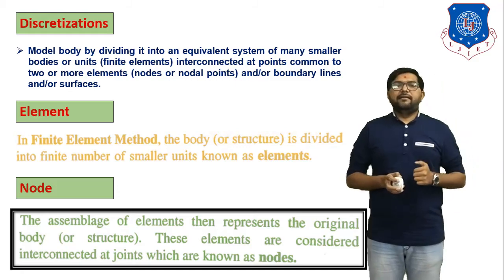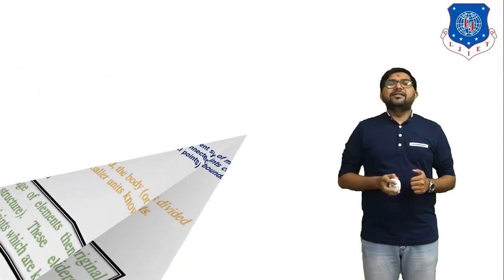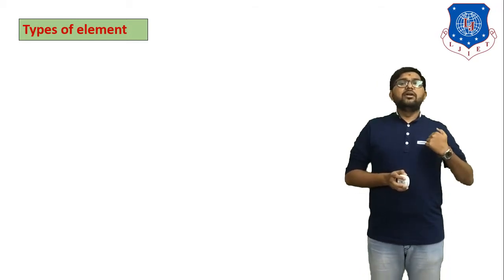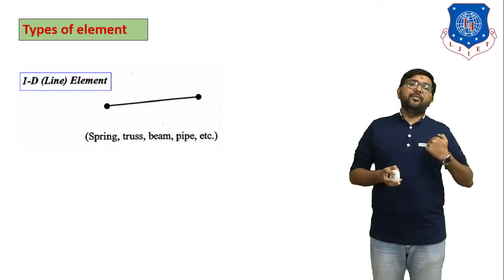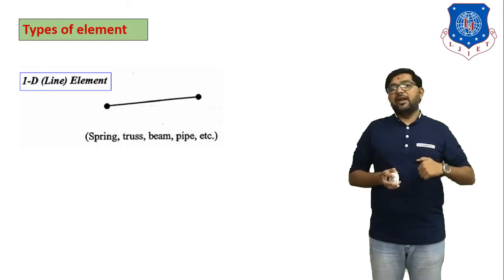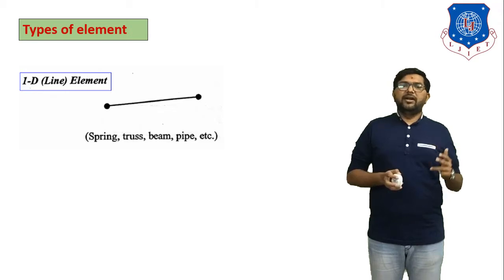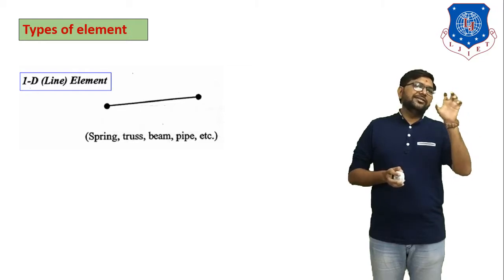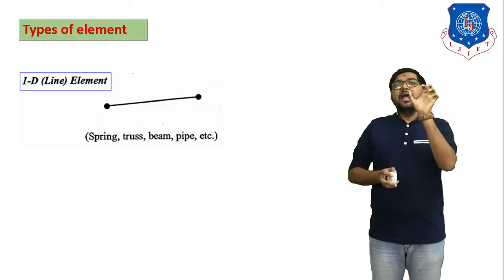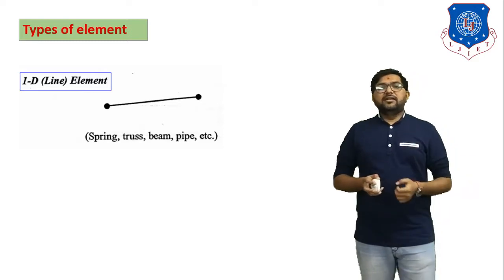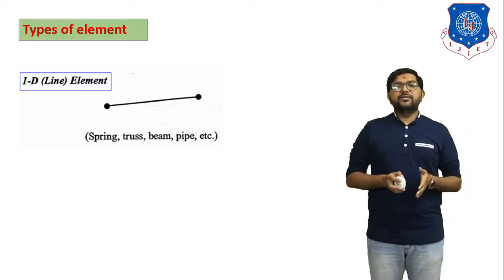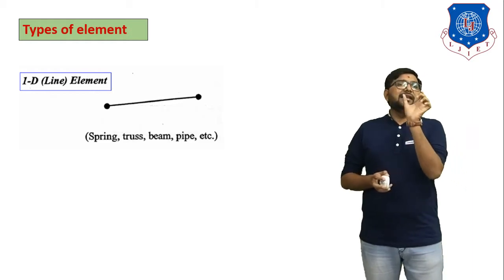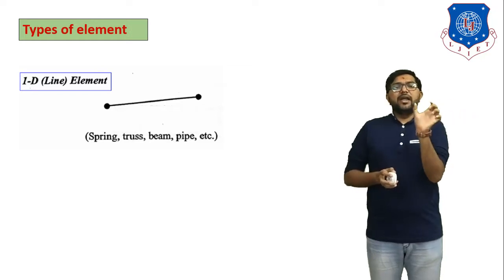Now we discuss types of elements. For any analysis, we first have to consider the type — whether the problem involves a 1D element, 2D element, or 3D element. When analyzing any object, we must first define which particular element type applies to that body. The first type is the 1D element, also called a line element — any straight line indicates a one-dimensional element.